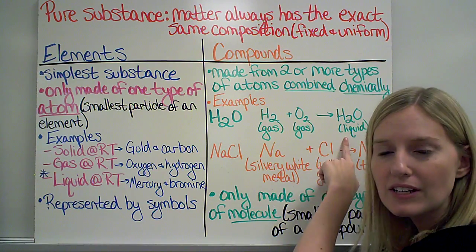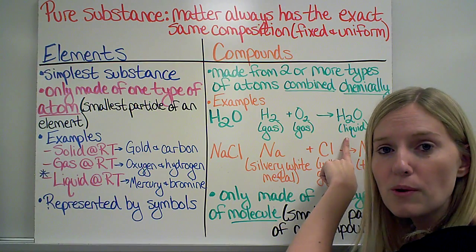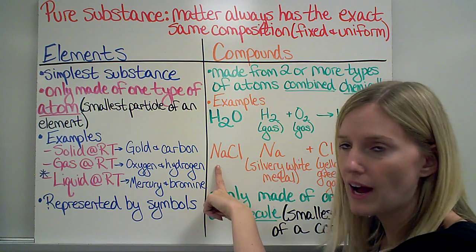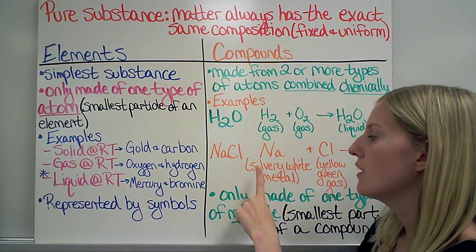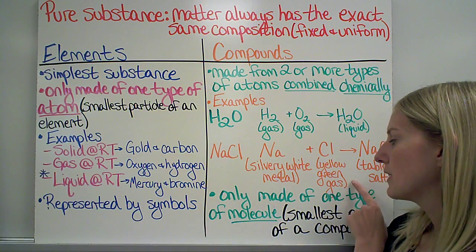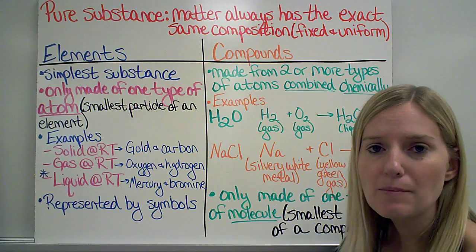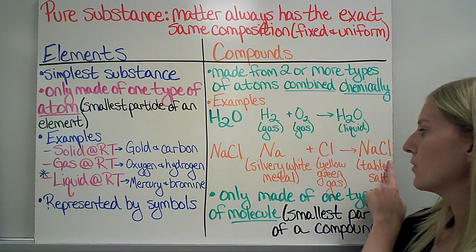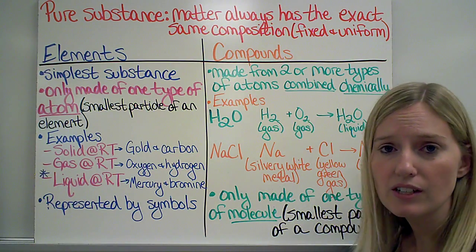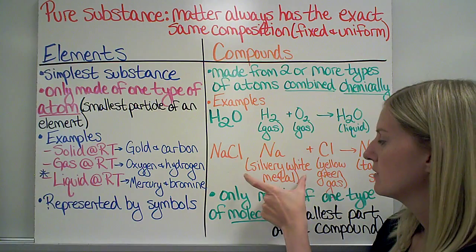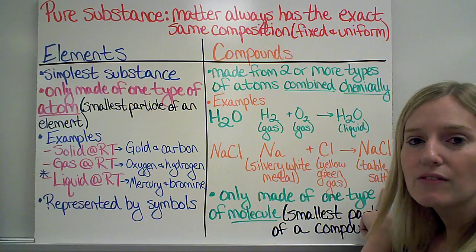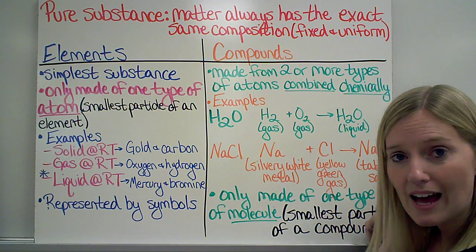The same is true for NaCl, which is sodium chloride. Sodium by itself is a silvery white metal. Chlorine by itself is a yellow green gas. If I combine them chemically, they create sodium chloride, NaCl. And that is just table salt. It's what we put on our food. So again, by themselves, they have specific properties. But when put together, they have new properties that they did not have before.